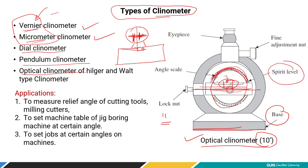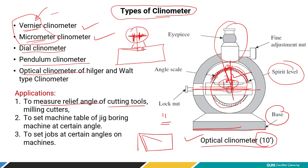You rotate the whole angular scale just as you do with a bevel protector, and that movement itself is the measurement of angle. From the eyepiece you can read how much the angle has deviated from the original equilibrium conditions. The optical clinometer is used to measure the relief angle of cutting tools — such as rack angle and back angle — and to set the machine table of a jig boring machine at certain angles when boring at inclined positions.